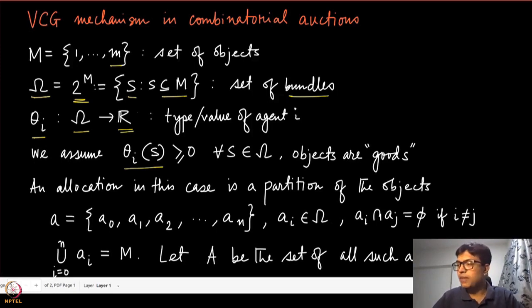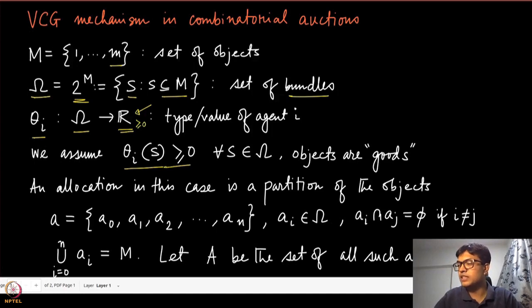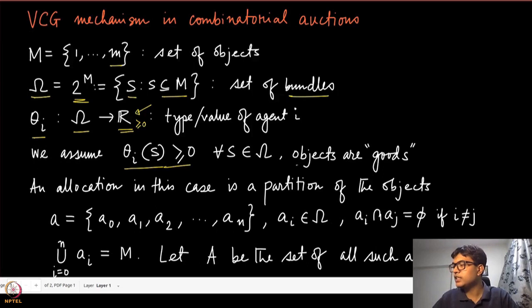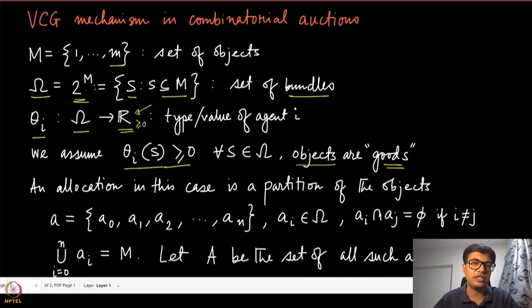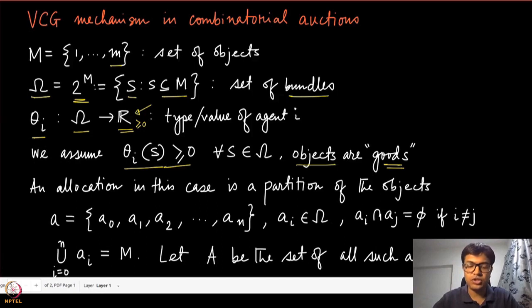Even though the mapping goes to the whole real line, we will only focus on the non-negative part. This means the valuations of these agents are always non-negative. This is also referred to as objects being 'goods' — they always give non-negative valuation. An agent can have zero valuation, meaning they don't want that object, but valuation can never be negative.